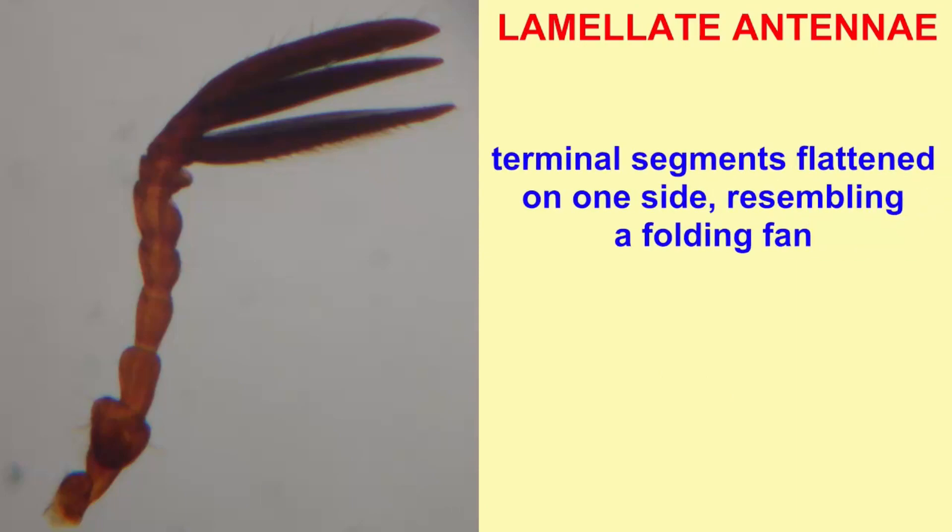In lamellate antennae, like those found in many beetles, the terminal segments are flattened on one side and resemble a folding fan.